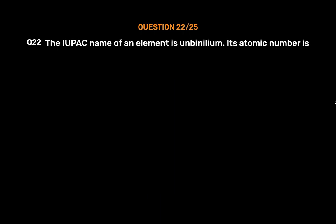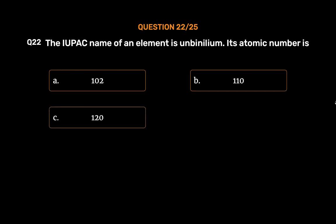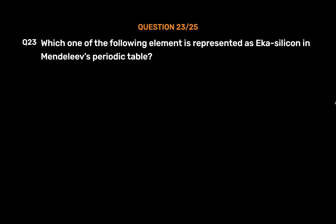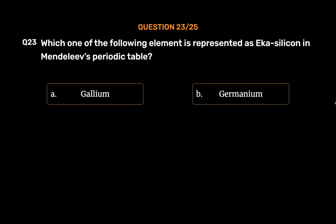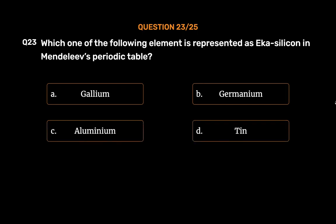Question number 22. The IUPAC name of an element is unbinyllium. Its atomic number is: Option A, 102; Option B, 110; Option C, 120; Option D, 106. The correct answer is Option C, 120. Question number 23. Which one of the following elements is represented as Eka-silicon in Mendeleev's periodic table? Option A, gallium; Option B, germanium; Option C, aluminium; Option D, [iodine]. The correct answer is Option B, germanium.